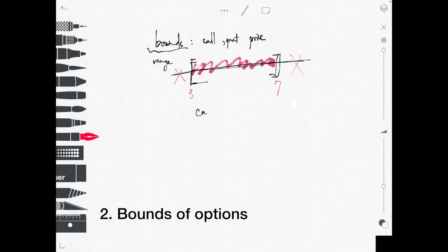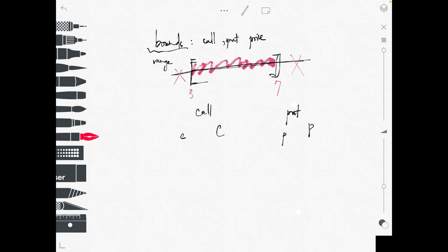Let me give you a table that summarizes the bounds of the call and put price. We have the call and the put, and remember: for the call we use small 'c' and capital 'C', for the put we use small 'p' and capital 'P'. The small notation represents a European option, and capital represents an American option.